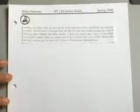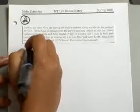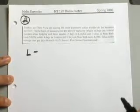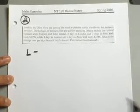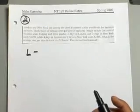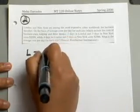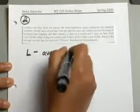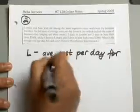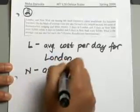So let's go ahead and assign our variables first. For London, we will go ahead and use L as our variable. If you choose to use X and Y, that is fine too. I just like to use variables that will associate with the unknown, so it's just easy for us to look at it and know what we're talking about. So L will represent the average cost per day for London and for New York, we will use N to represent the average cost.